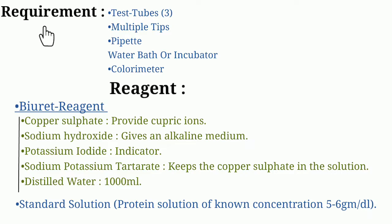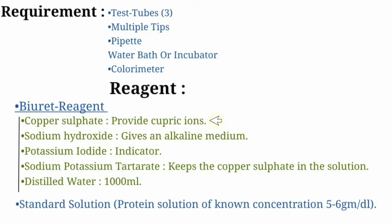Requirements for the test: three test tubes, multiple tips, pipette, water bath or incubator, and a colorimeter. For reagents, we require the Biuret reagent. The composition of the Biuret reagent is: copper sulphate (provides cupric ions), sodium hydroxide (gives alkaline medium), potassium iodide (acts as an indicator), sodium potassium tartrate (keeps copper sulphate in solution), and distilled water as solvent to make 1000 ml. The second reagent is a standard protein solution of known concentration: 5 to 6 grams per deciliter.